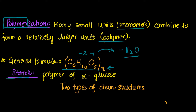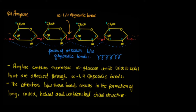Our first polymer is starch — a polymer of alpha glucose. Starch has two types of chain structures. The first is amylose. In amylose, many alpha glucose units are joined together by alpha 1-4 glycosidic bonds. You can consider it as many maltose units joined together, forming one very long chain.